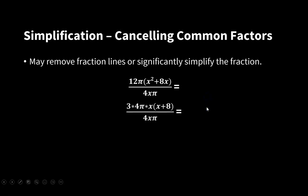You can do two things to simplify this fraction. First, 12π can be written as 3 × 4π. And x can be factored out of the parentheses. The denominator at the moment is 4xπ. We have 4xπ above and 4xπ below, and these can be cancelled and removed from the fraction.